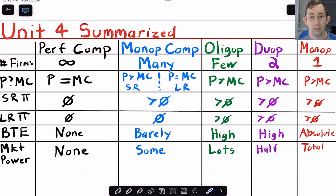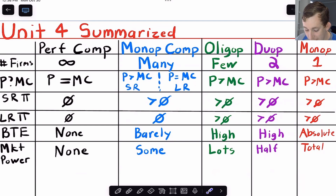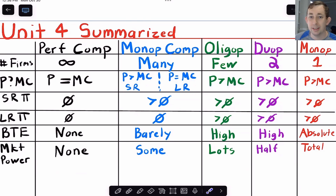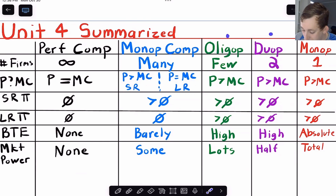What about comparing price to marginal cost in each of these markets? Well in perfect competition we know marginal revenue is equal to marginal cost, so price must be equal to marginal cost. In monopolistic competition, the price is going to be above marginal cost in the short run, but in the long run they're going to be equal. From oligopoly on to monopoly, prices are greater than marginal cost, which indicates positive profits for oligopolies and monopolies.